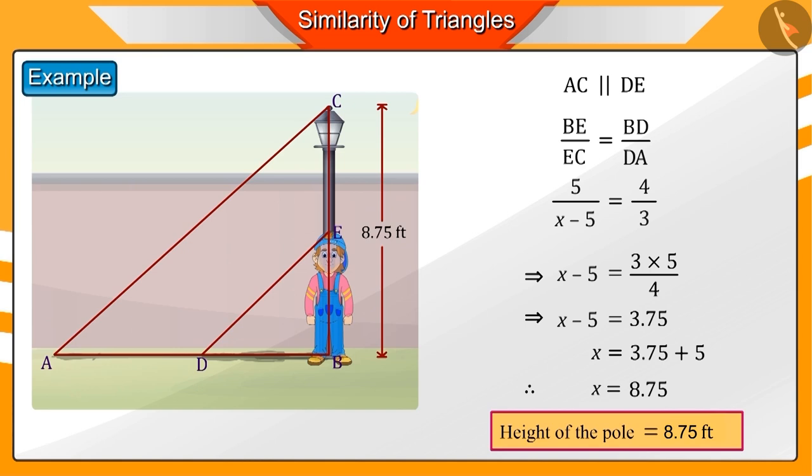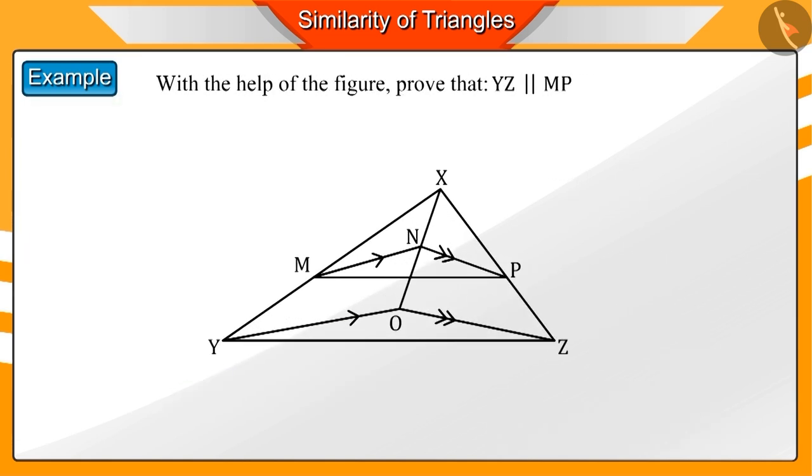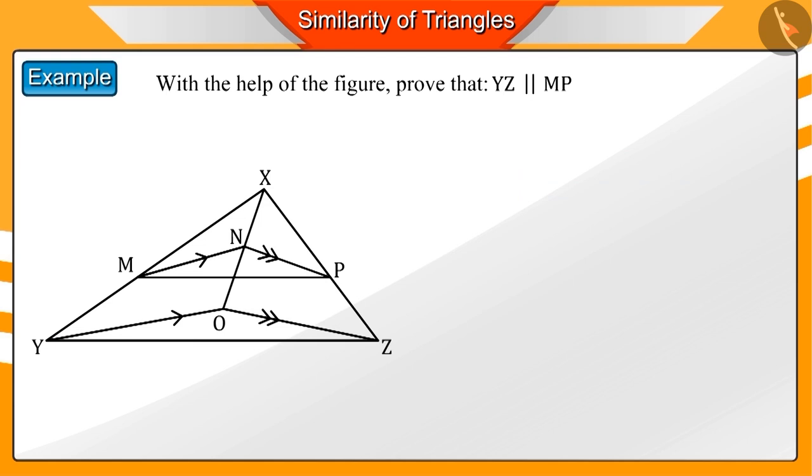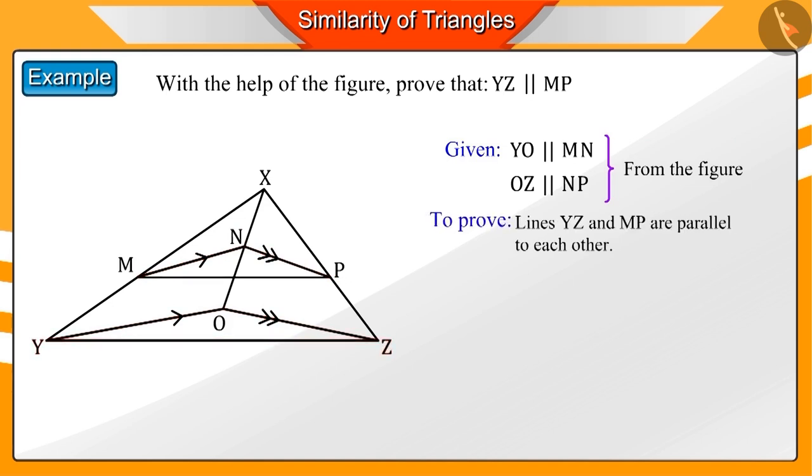Let's look at another example. With the help of this figure, prove that in triangle XYZ, lines YZ and MP are parallel to each other. What can you tell by looking at the figure? The similar arrow marks in the figure indicate that these lines are mutually parallel. We have been asked to prove that the lines YZ and MP are parallel. How can we prove this?